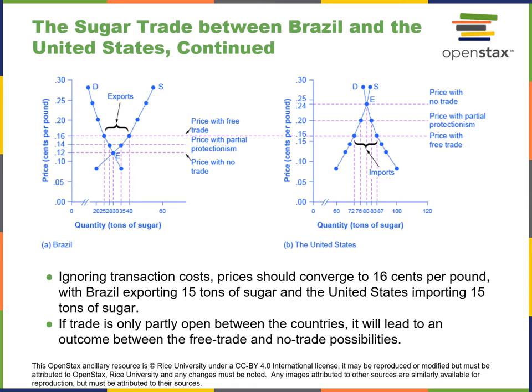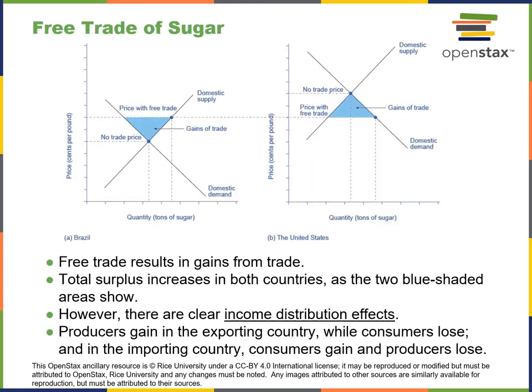Ignoring transaction costs, prices should converge to 16 cents per pound, with Brazil exporting 15 tons and the United States importing 15 tons. If trade is only partially open between the countries, it'll lead to an outcome between free trade and no-trade possibilities. Free trade means no restrictions; no trade would be an embargo. Free trade results in gains from trade, so total surplus increases in both countries as the blue shaded areas show. However, there are clear income distribution effects — producers gain in the exporting country while consumers lose, and in the importing country consumers gain while producers lose.